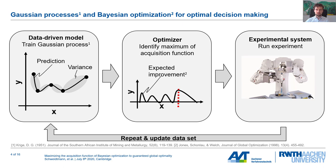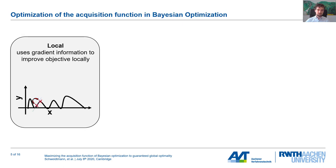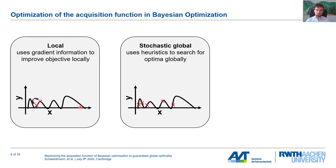There are different ways to optimize these functions. First, there is local optimization, where we use gradient information to improve an objective locally. However, local optimization can get stuck in local optima, particularly if you have multiple local optima such as in this acquisition function. Another way is stochastic global optimization, such as genetic algorithms, simulated annealing, and so on — using heuristics to search globally for the optimal solution.